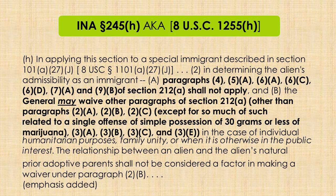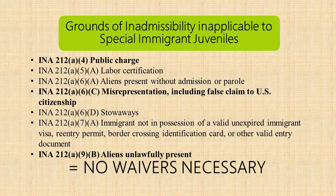The discretion in INA 245H is given to the adjudicator for certain types of inadmissibility issues. The statute lays out exactly what reasons are necessary — the adjudicator must find that it is for humanitarian purposes, family unity, or when it is otherwise in the public interest. The breakdown is: certain grounds where no waivers are necessary, waivable grounds, and non-waivable grounds.